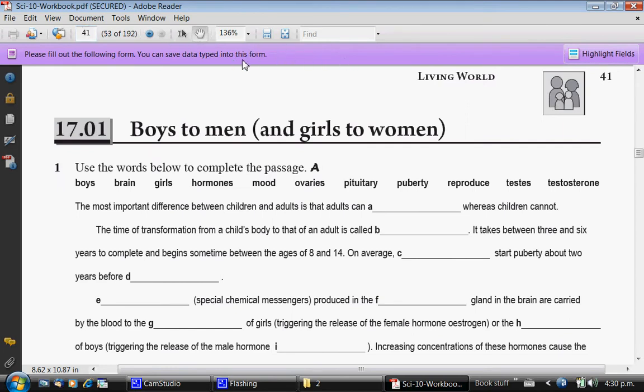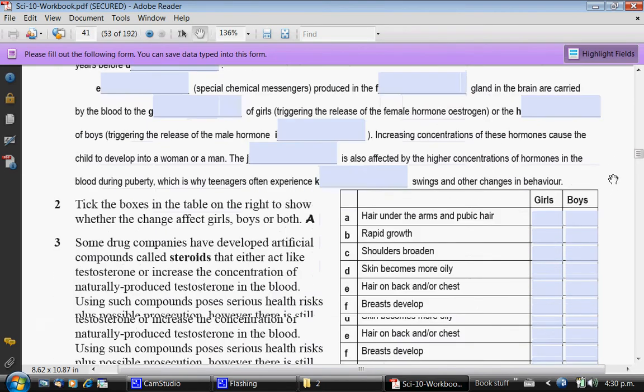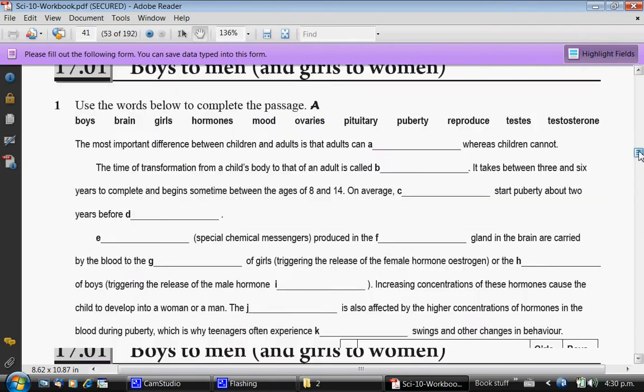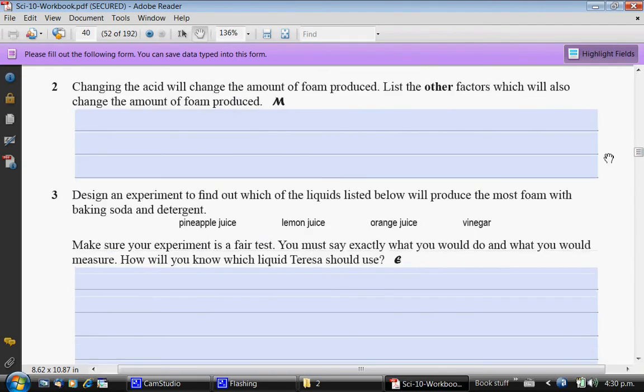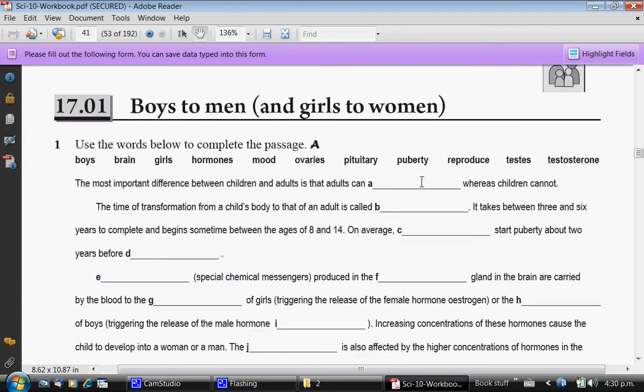This purple bar here lets you know that this document has been turned into a form. And if I hit the highlight button here, you can see that all the form fields, these blue boxes here, are places where students would write answers in their printed workbook. And the magic thing about this is that you can write answers on the screen as the kids are writing them.